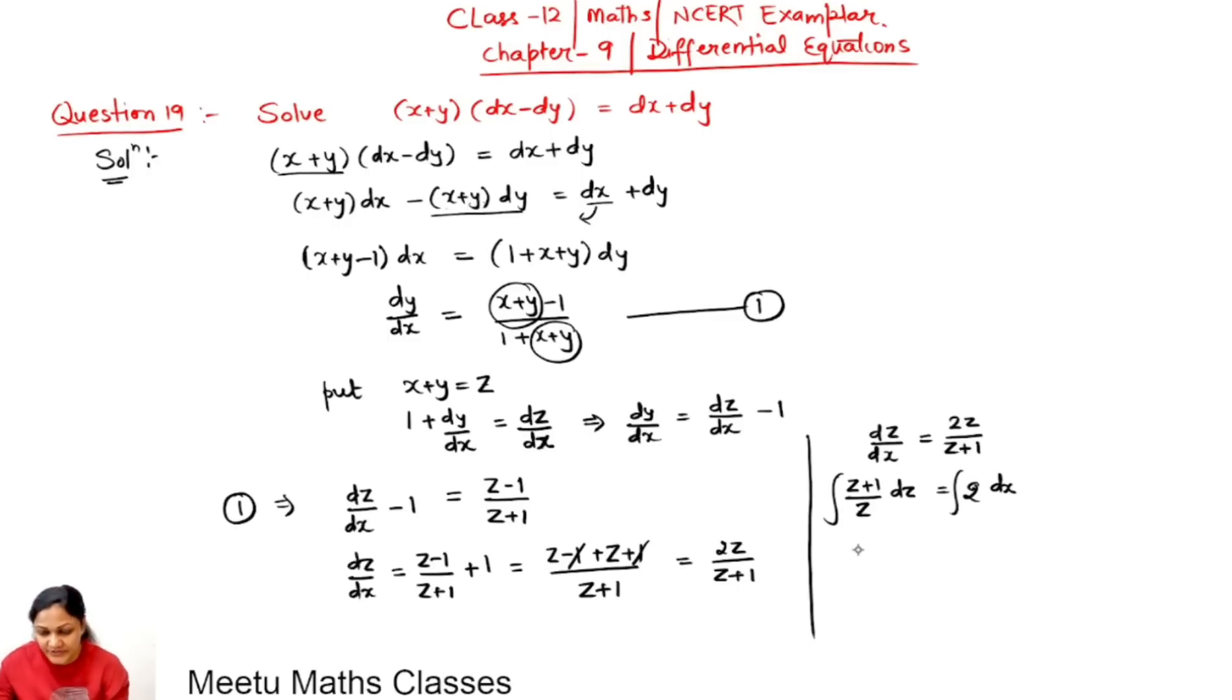So z upon z is 1, the integral of 1 is z, and integral of 1 upon z is log z equals 2x plus c.